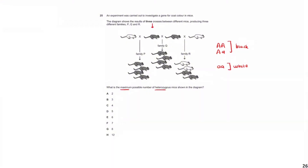Now we test our assumption. We know this mouse is black, so I'm going to assume its genotype is Aa, because we want as many heterozygous as possible. I'll also assume the other black mouse contains Aa. In family Q, mating two Aa mice gives AA, Aa, Aa, and aa — so you get a mixture of black and potentially white mice, or all black, which is perfectly reasonable since all offspring shown are black.